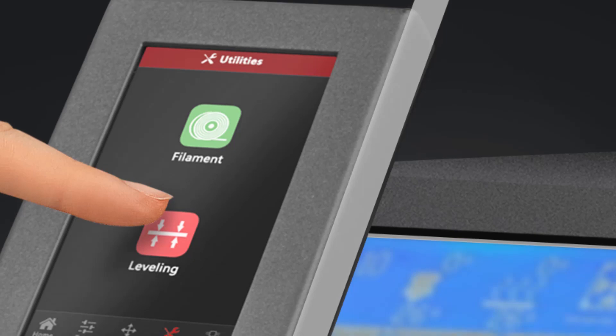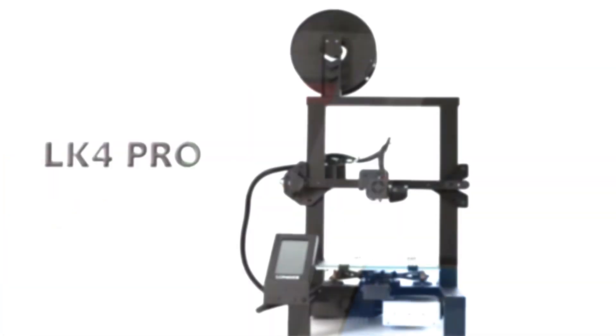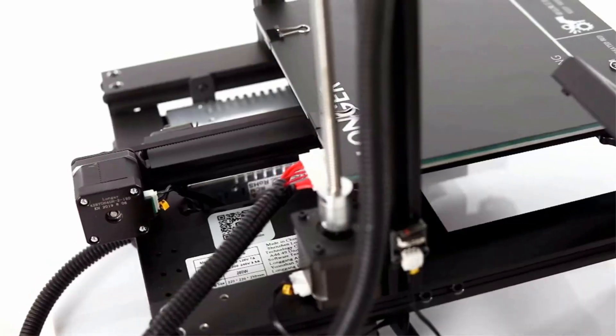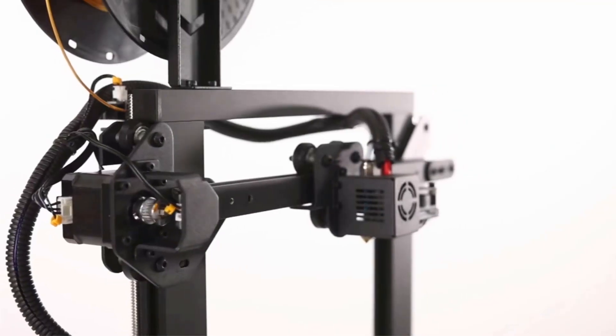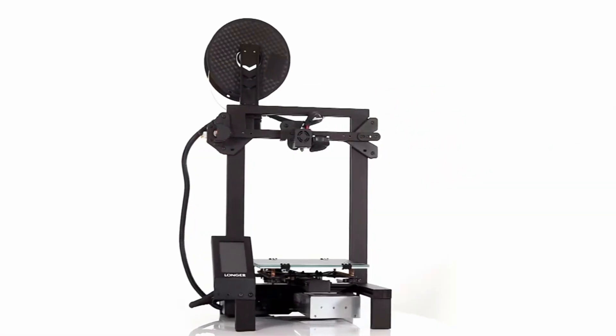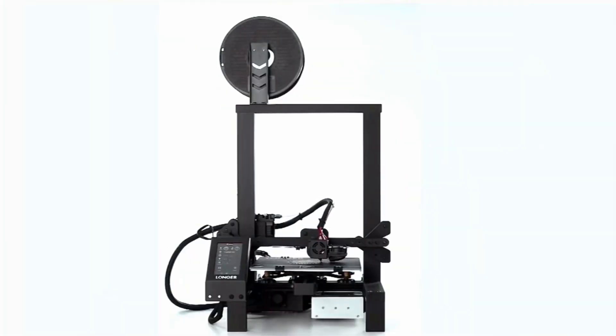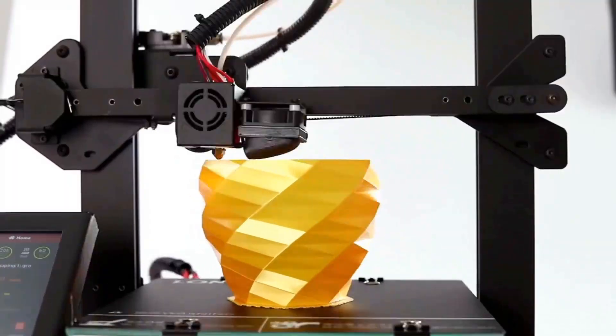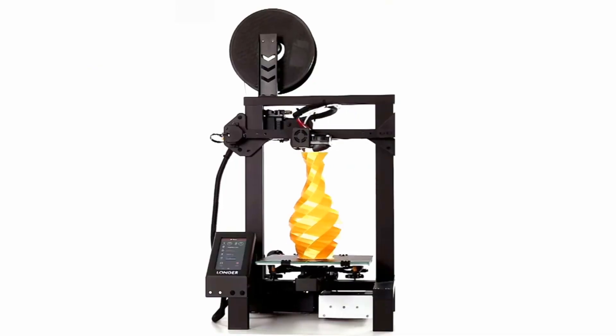It prints quietly and maintains a clean appearance. It has a unique frame design. The automatic sensor will pause the printing when the filament runs out. Longer LK4 Pro is very easy to assemble because it is 90% pre-assembled to avoid any difficulty, as the complicated parts such as the gantry cantilever and nozzle have been assembled before shipping.